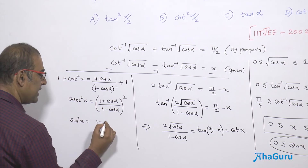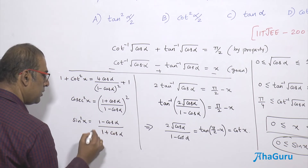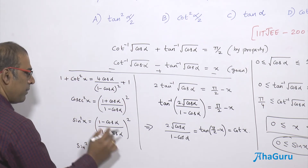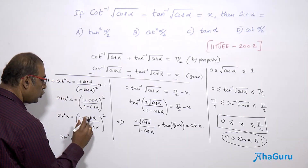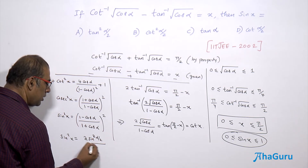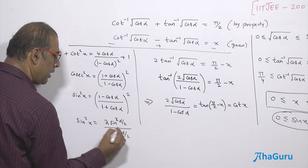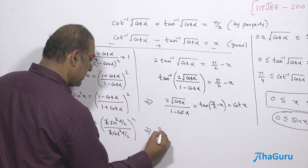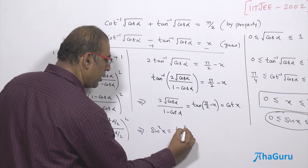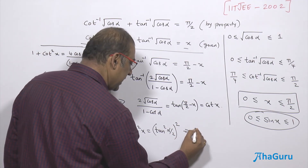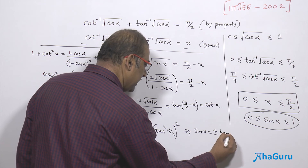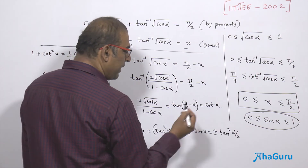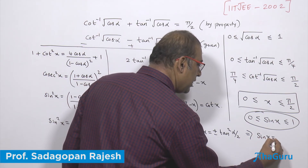Therefore cosec²x = (1 + cosα)² / (1 - cosα)², which means sin²x = (1 - cosα)² / (1 + cosα)². Using half-angle identities, 1 - cosα = 2sin²(α/2) and 1 + cosα = 2cos²(α/2), so sin²x = tan⁴(α/2). Therefore sin x = ±tan²(α/2). Since sin x is non-negative, we take the positive root.